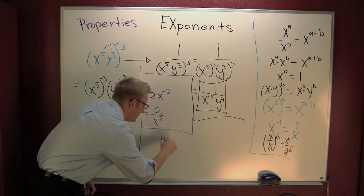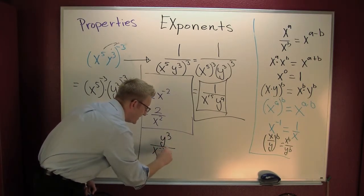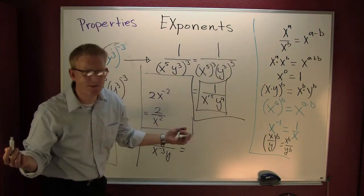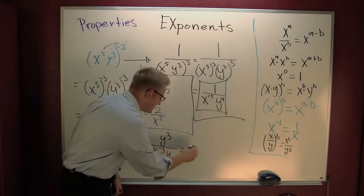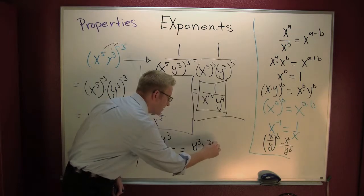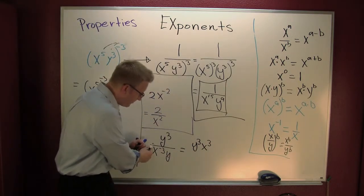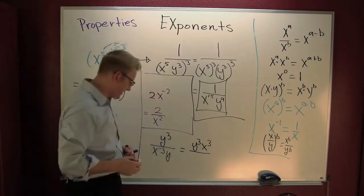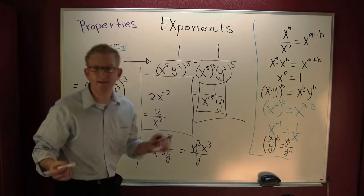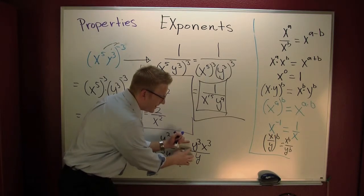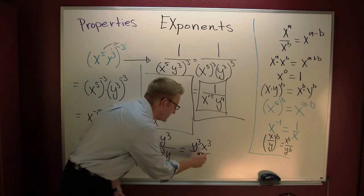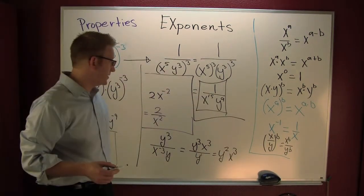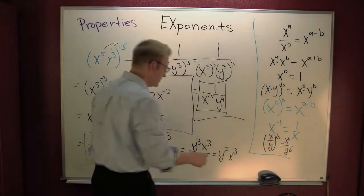What if you had a minus in the denominator? Something like y to the third over x to the minus three, y to the first. Take care of your minus signs first — I've got a minus in that exponent, so I bring x to the third up top. Then I still have y to the third over y to the first in the denominator. Same base, dividing, so I subtract exponents: three minus one gives y squared. Final answer: y squared over x to the third.